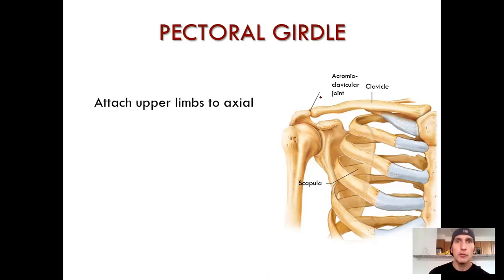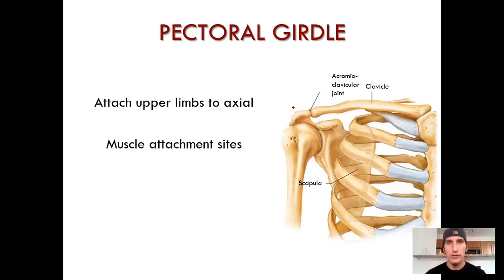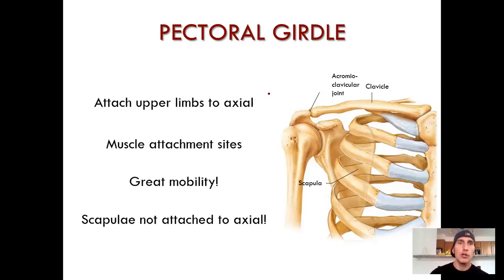The pectoral girdle also provides muscle attachment sites — for your biceps, triceps, deltoids, and the whole rest. We'll get into that later. The pectoral girdle allows for great mobility, and there are a number of reasons for that which we'll get into in our lecture on joints.